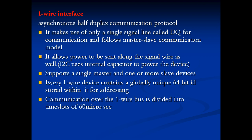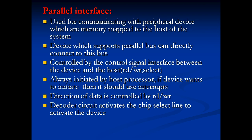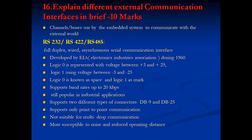Every one-wire device contains a globally unique 64-bit ID stored within it for addressing purposes. Communication over the one-wire bus is divided into time slots of 60 microseconds. Parallel interface is very useful for interfacing memories and for memory mapping — it supports a parallel bus directly connected to the device. It is controlled by control signals and is always initiated by the host processor. A decoder circuit activates the chip select line to activate the device.